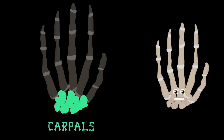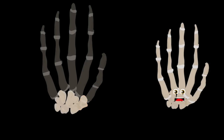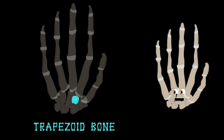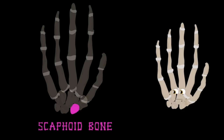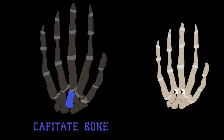The trapezium bone is at the base of your thumb. It's a small bone and you'll learn it's an important one. The trapezoid bone is kind of shaped like a wedge. The scaphoid bone sits on the wrist's tight edge. The capitate bone is in the middle of your wrist, and it's the 4th bone I will talk about on this list.